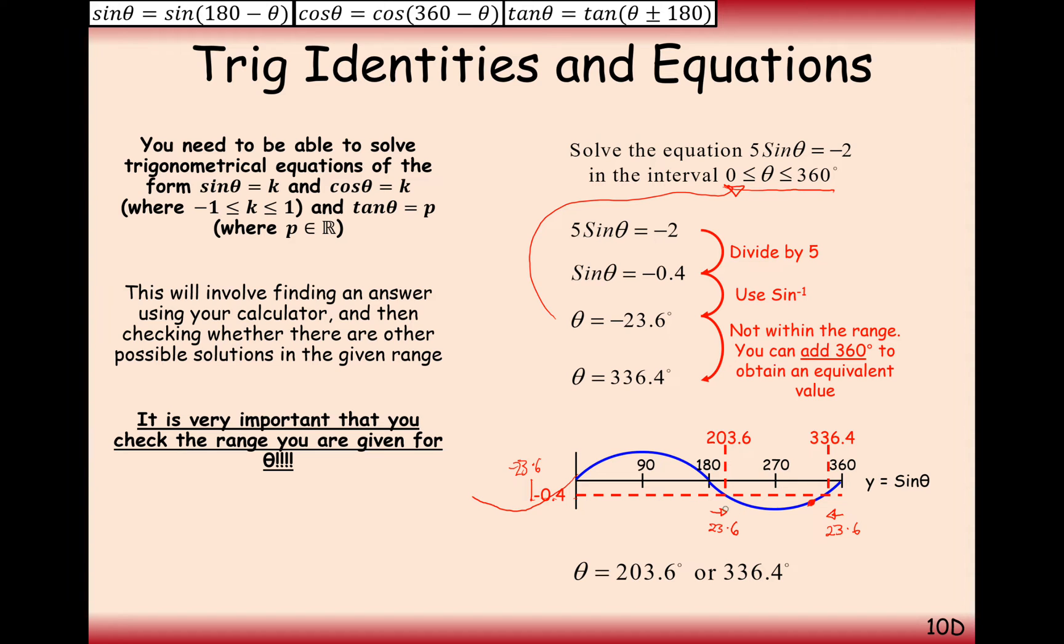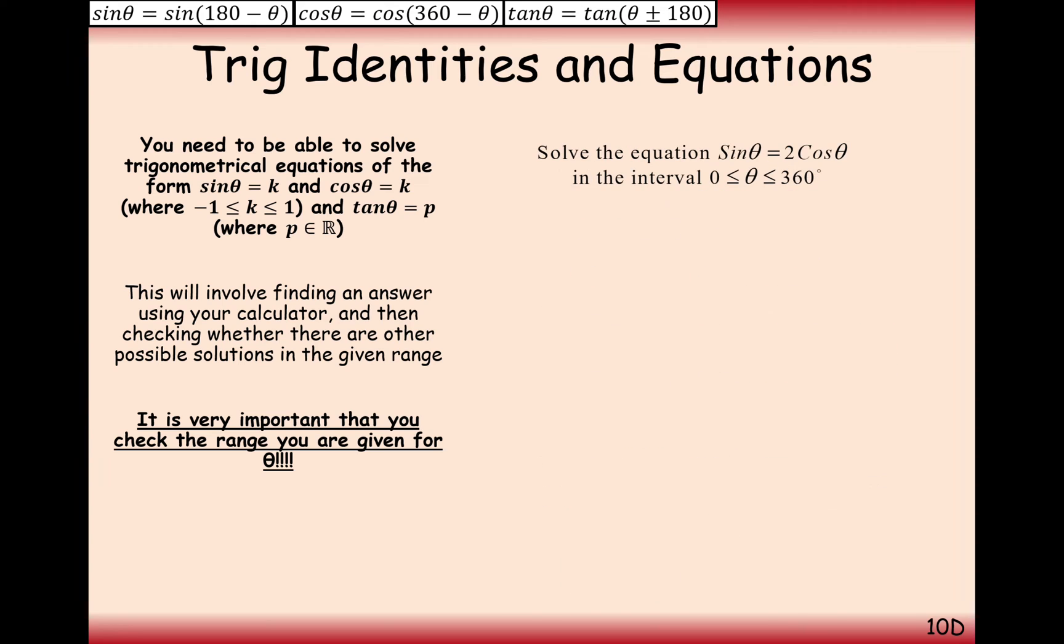So those are our two answers for this equation here. 203.6 and 336.4. So we're going to continually use the symmetry of the sine graph here to find solutions and more than one solution to these trigonometric equations. Let's have another go then. Solve the equation sine theta equals 2 cos theta in between the interval 0 to 360.